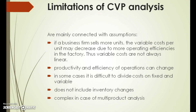Because of those assumptions, there are limitations. For example, if there is an assumption that total sales and total costs are linear, a company that sells more products may see variable costs decrease thanks to increased efficiency and productivity in the factory. Similarly, productivity and efficiency may change when a company sells more. In some cases it is difficult to divide costs into fixed and variable, and moreover, fixed costs can change when reaching certain thresholds.